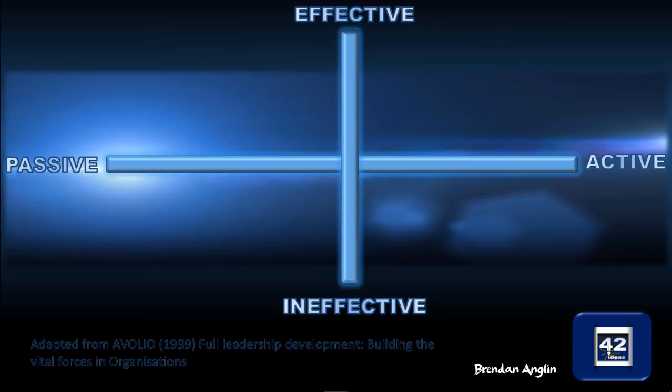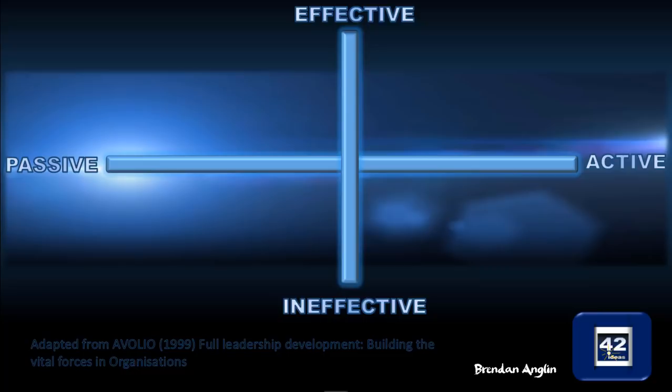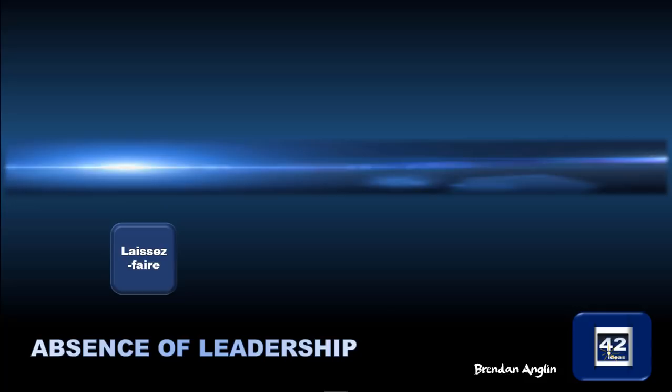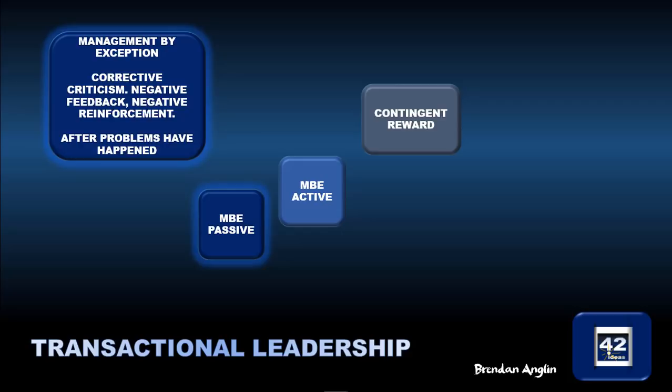Bass put all of this on a graph, comparing three different types of leadership. First, laissez-faire leadership is ineffective — there is an absence of leadership, very passive, and the leader doesn't actually take any role; it's abdication as opposed to delegation. Transactional leadership has three elements. The first is management by exception in a passive way — it's about corrective criticism and negative feedback, negative reinforcement, which happens after problems have occurred.